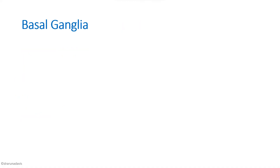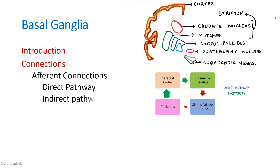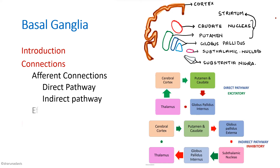To summarize, when connections and functions of basal ganglia is asked, first mention the major parts, then write about the afferent connections, which should include the direct pathway and indirect pathway, as well as the efferent connections and the functions. That is about basal ganglia. I hope you now know what to write when a question is asked. Thank you.